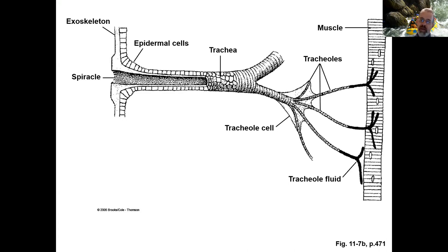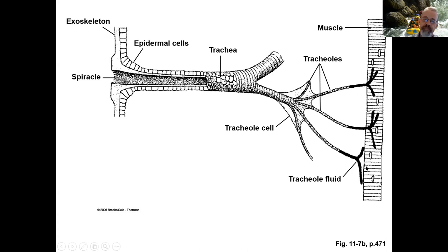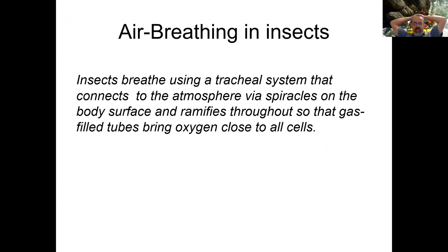This type of system only works for small animals — and this is actually why insects are so small. Thank God, otherwise you'd have giant insects like from sci-fi movies. Insects breathe using a tracheal system connected to the atmosphere via spiracles on the body's surface, and the gas-filled tubes bring oxygen close to all cells. Whatever CO2 accumulates diffuses back out.